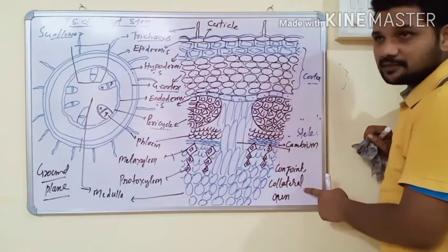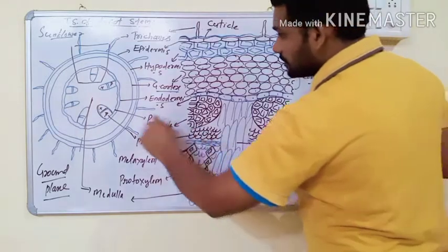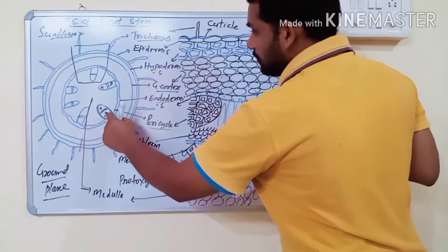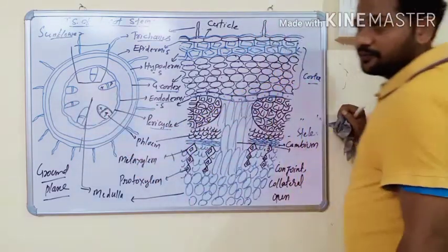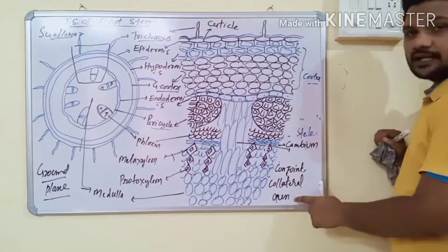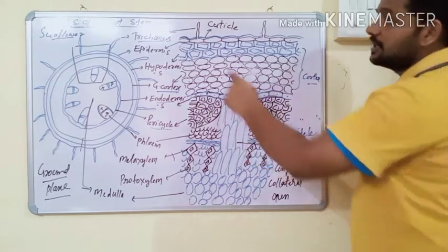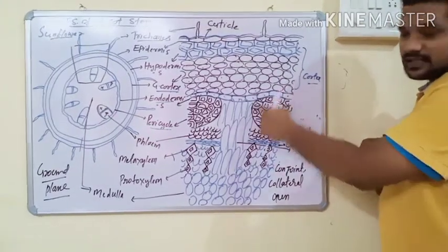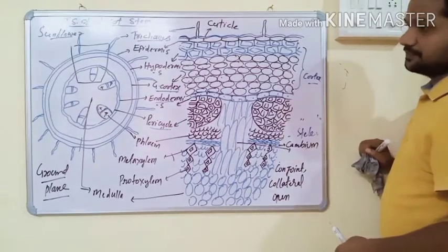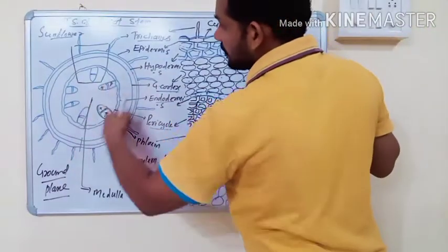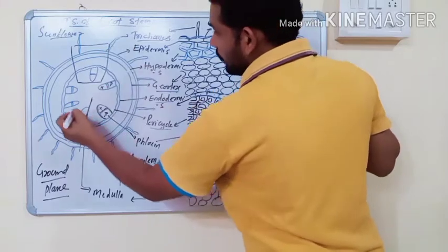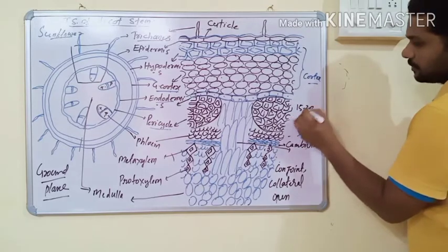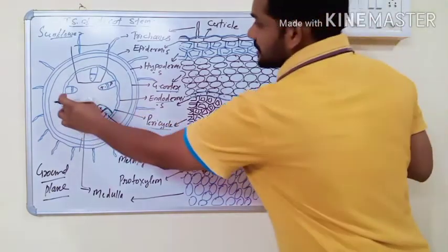Conjoint means both xylem and phloem are present together. Collateral means both are on the same radius. Open means cambium is present between xylem and phloem. So conjoint, collateral, open type of vascular bundles are present only in dicot stem. Due to the presence of cambium, secondary growth is possible. In the ground plan of dicot stem, 15 to 20 vascular bundles are present in a ring form.